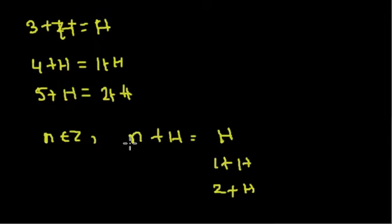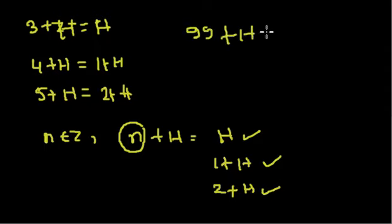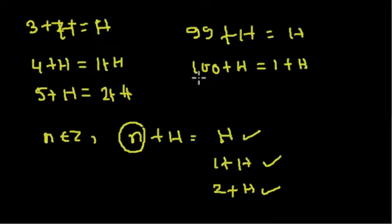When we divide integer n by 3 and get remainder 0, we get the coset H. When we get remainder 1, we get 1+H. When we get remainder 2, we get 2+H. For example, 99+H = H because 99 divided by 3 gives remainder 0. And 100+H = 1+H because 100 divided by 3 gives remainder 1. Similarly, 103+H = 1+H because 103 divided by 3 gives remainder 1.